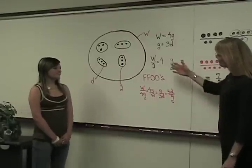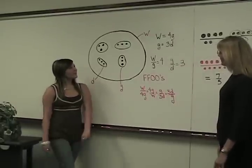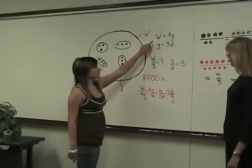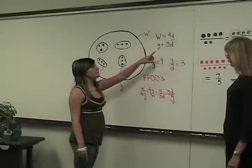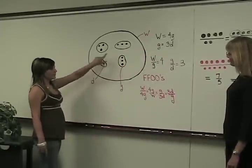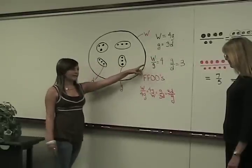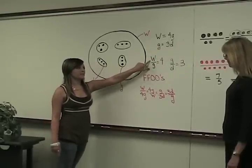Kelsey, can you describe for me what you see here in this diagram? The whole with four groups, otherwise W equals 4G. Groups with three dots, otherwise G equals 3D. And the four here is relationship to W and G.